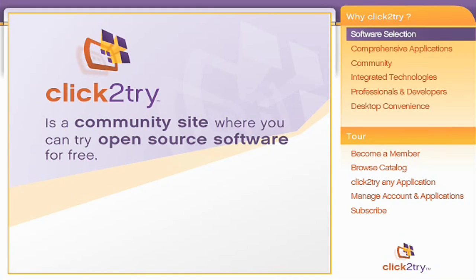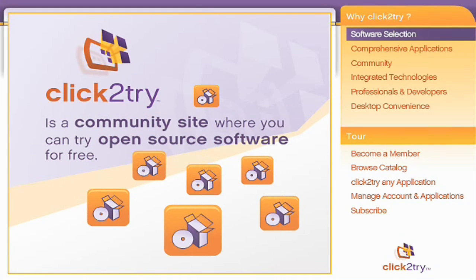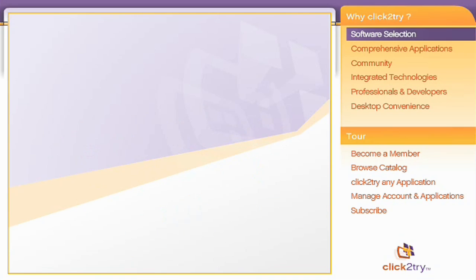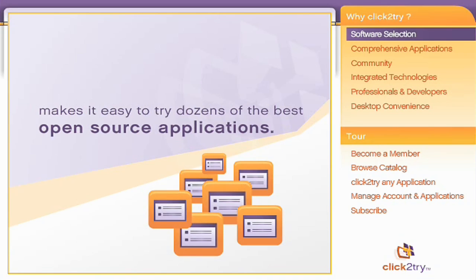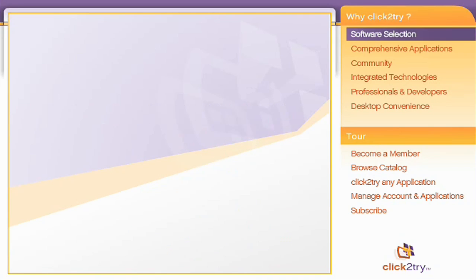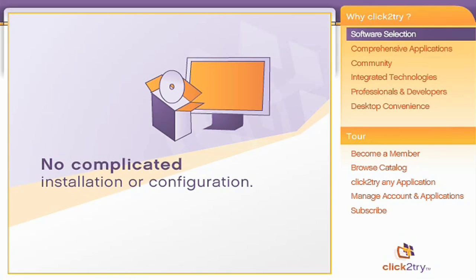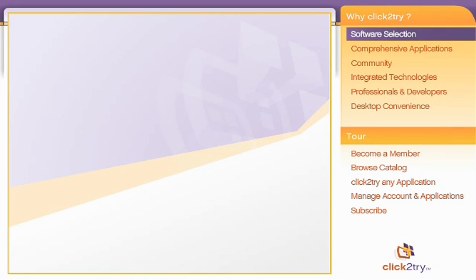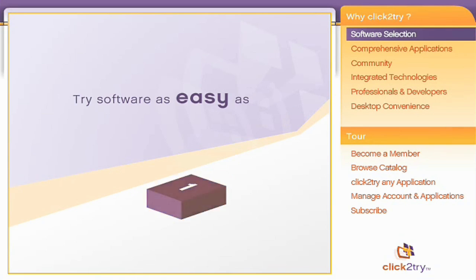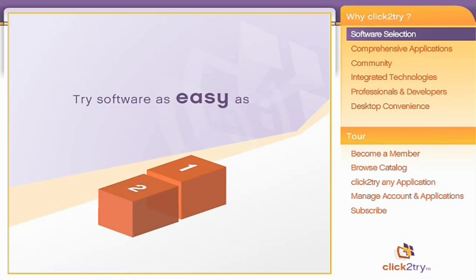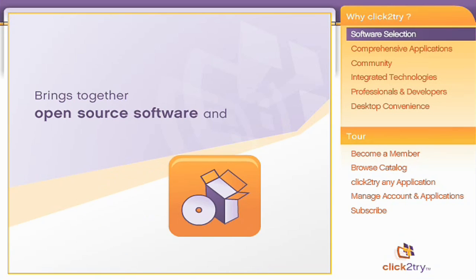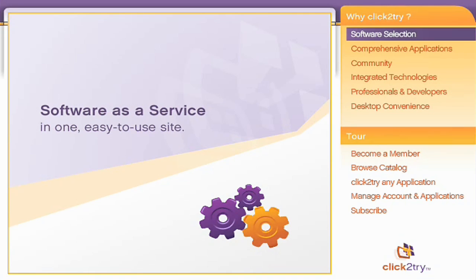Click2Try is a community site where you can try open source software for free and easily try dozens of the best open source applications. No complicated installation or configuration — try software as easy as 1, 2, 3. Click2Try brings together open source software and software as a service in one easy to use site.